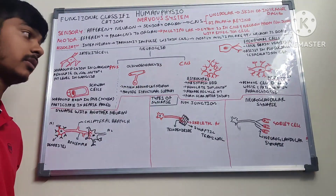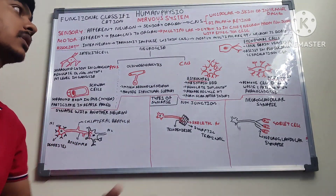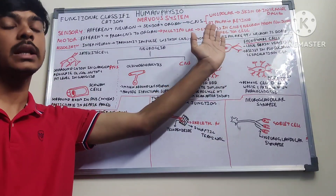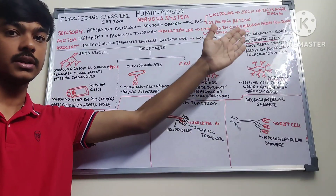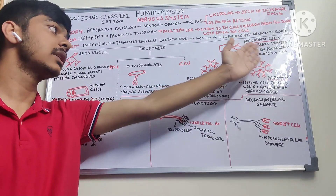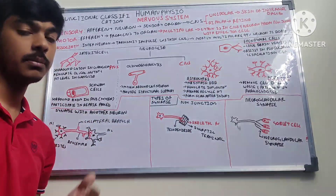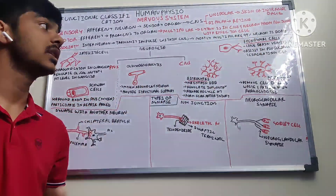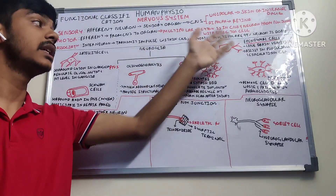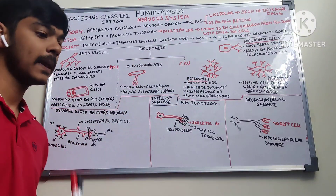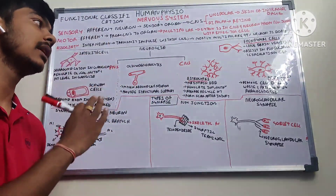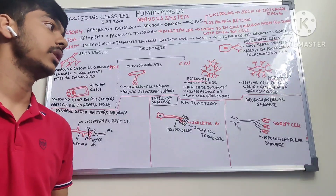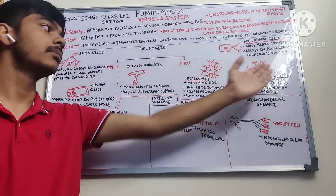Scar formation is a process of repair when a wound is healing by secondary intention where viable cells are not present. Ependymal cells line the brain ventricles and help in the production and circulation of cerebrospinal fluid. They are ciliated epithelial cells, and with the movement of the cilia they aid the movement of the CSF.